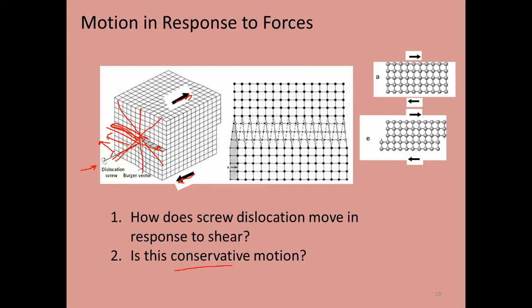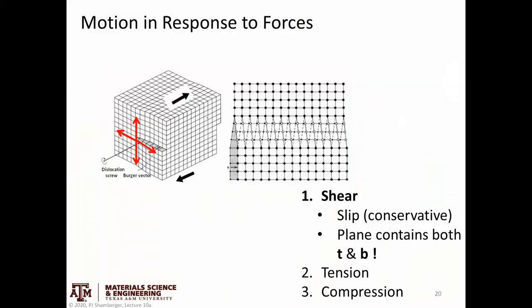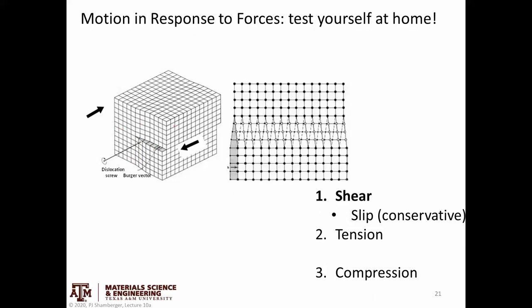But any other plane containing those two vectors is also a valid slip plane. Because the tangent vector and Burgers vector are parallel, a screw dislocation can easily slip in any direction. That was not absolutely true for edge dislocations.